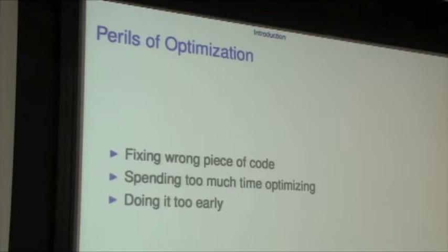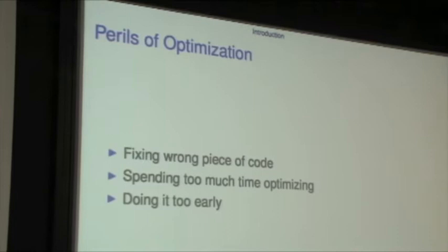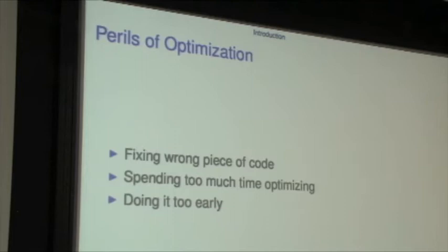The last peril of optimization is doing it too early. When developing and designing a system, instead of getting a significant amount of the system in place, someone will say they want to make this piece of code run really fast. So these are things to be avoided in optimization.